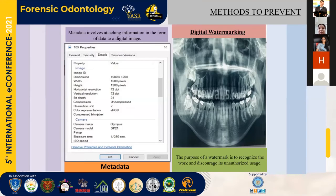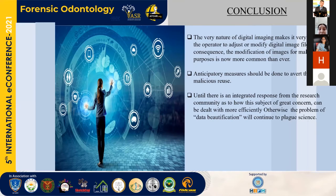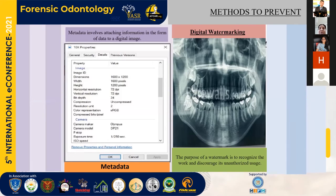What are the methods to prevent fraudulence in digital imaging? The first one is digital watermarking. The purpose of a watermark is to recognize the work and discourage its unauthorized usage. The second method is metadata. Metadata involves attaching information in the form of data to a digital image. Parameters such as dimensions, width, height, horizontal and vertical resolution — all these parameters remain unchanged.